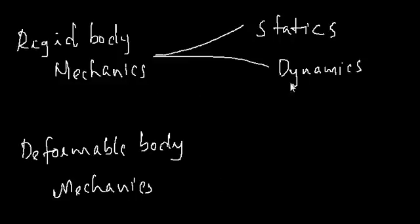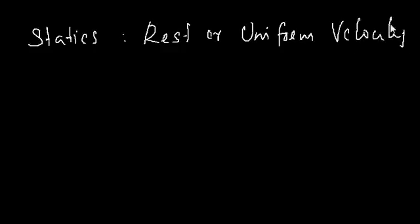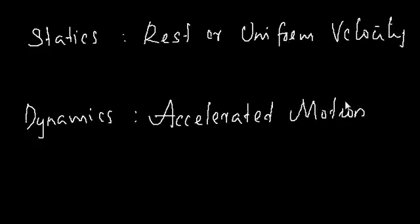Rigid body mechanics is again classified into two branches: statics and dynamics. Statics deals with the state of bodies that are either at rest or in uniform velocity motion, whereas dynamics deals with the condition where there is an accelerated motion in the body.